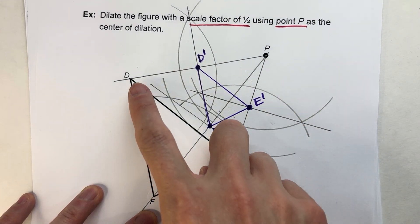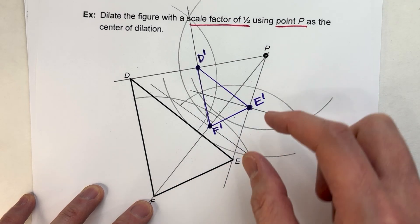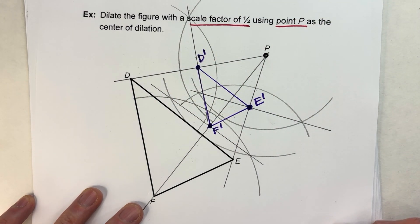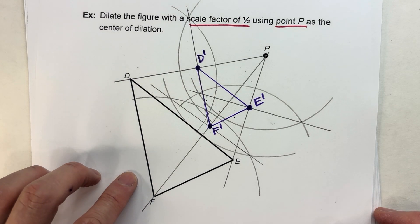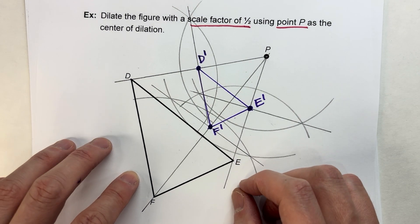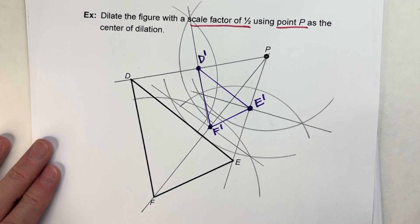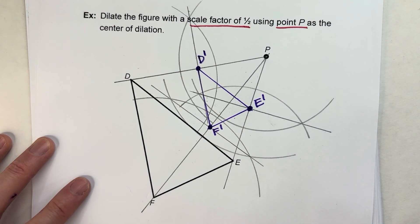So dilations always create the same shaped figure, it's just smaller or bigger. And we just follow these simple steps to construct them. So hopefully you found this video helpful. If you did, please hit that like button. Also subscribe because it really helps us out. But with that being said, good luck on your math and I will see you next time.